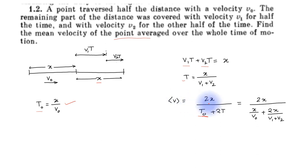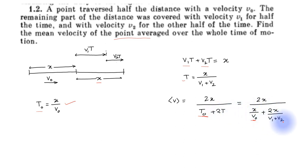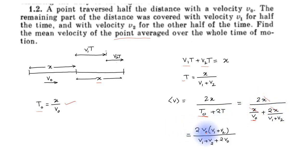Average velocity equals 2x divided by (x/v0 plus 2 times x/(v1 plus v2)). Solving this, x cancels out and we get average velocity equal to 2v0(v1 plus v2) divided by (v1 plus v2 plus 2v0).